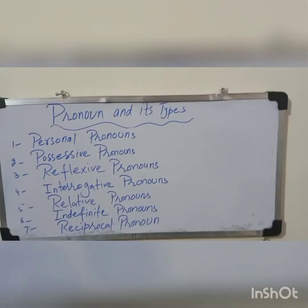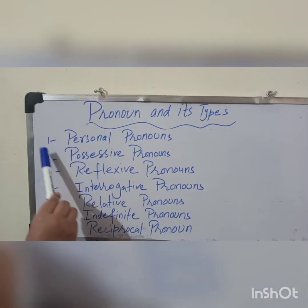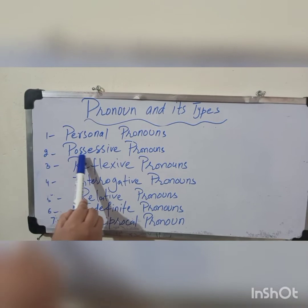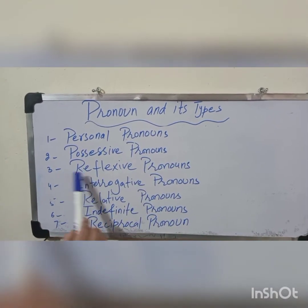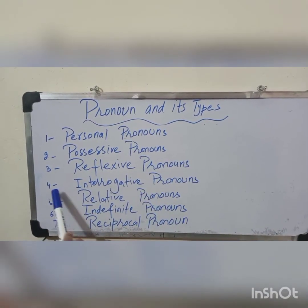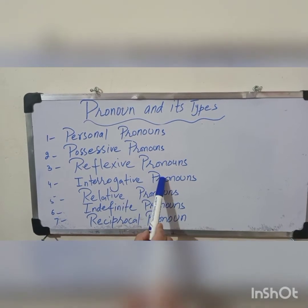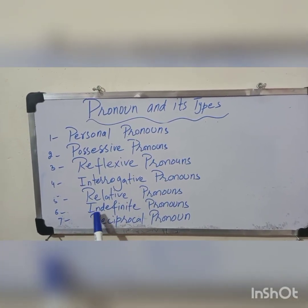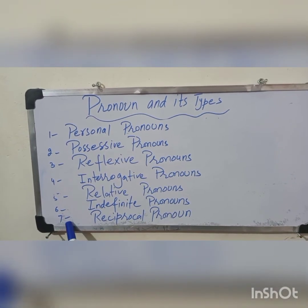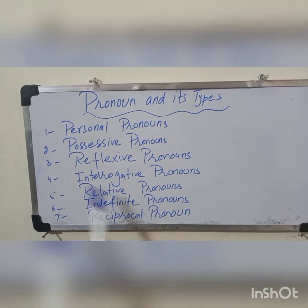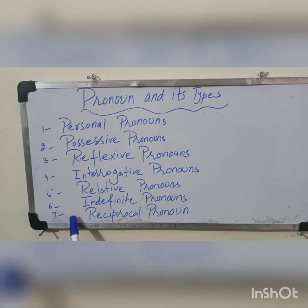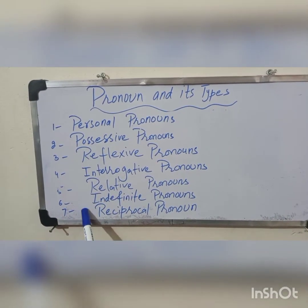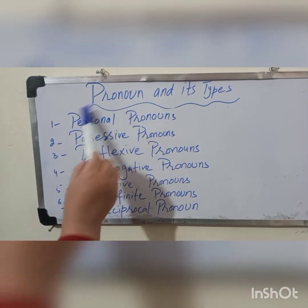اب دیکھیں ہمارے پاس pronoun کی types: first ہے personal pronouns، second ہے possessive pronouns، third ہے reflexive pronouns، fourth ہے interrogative pronouns، fifth ہے relative pronouns، sixth ہے indefinite pronouns، اور seventh ہے reciprocal pronouns۔ There are seven types of pronouns. اب ہم one by one ان کو discuss کرتے ہیں، سب سے پہلے personal pronouns۔